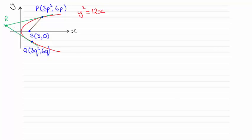It turns out then, if you've done this, that R has coordinates 3PQ for X, and the Y coordinate is 3P plus 3Q, or you might want to factorize that as 3 bracket P plus Q.